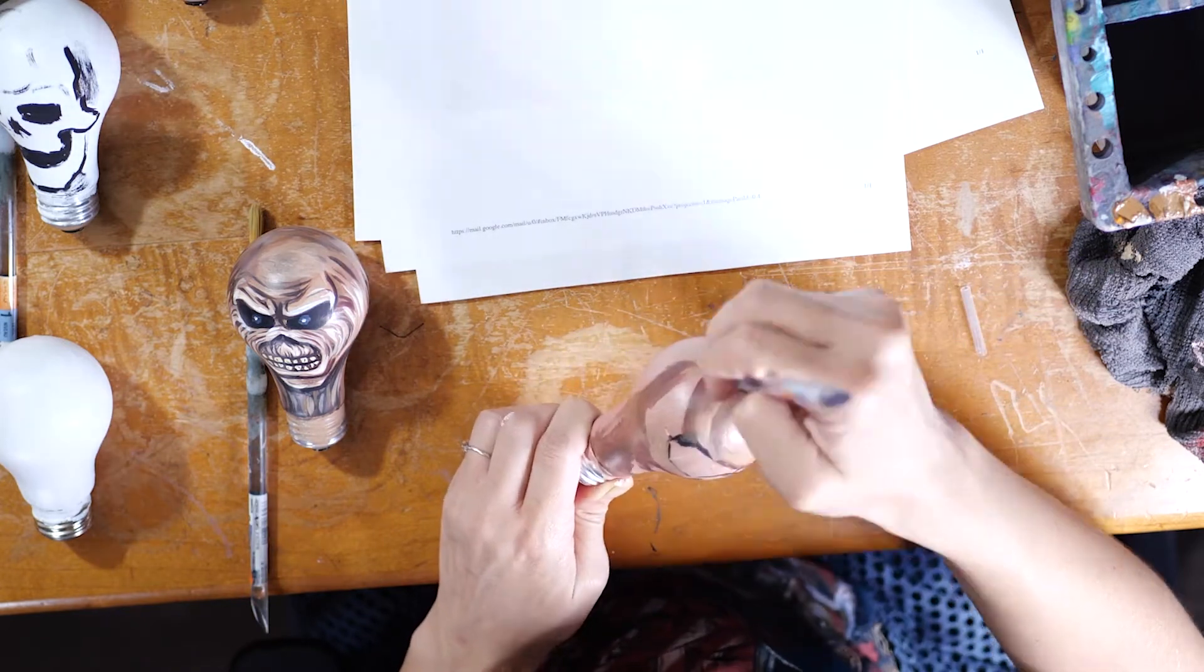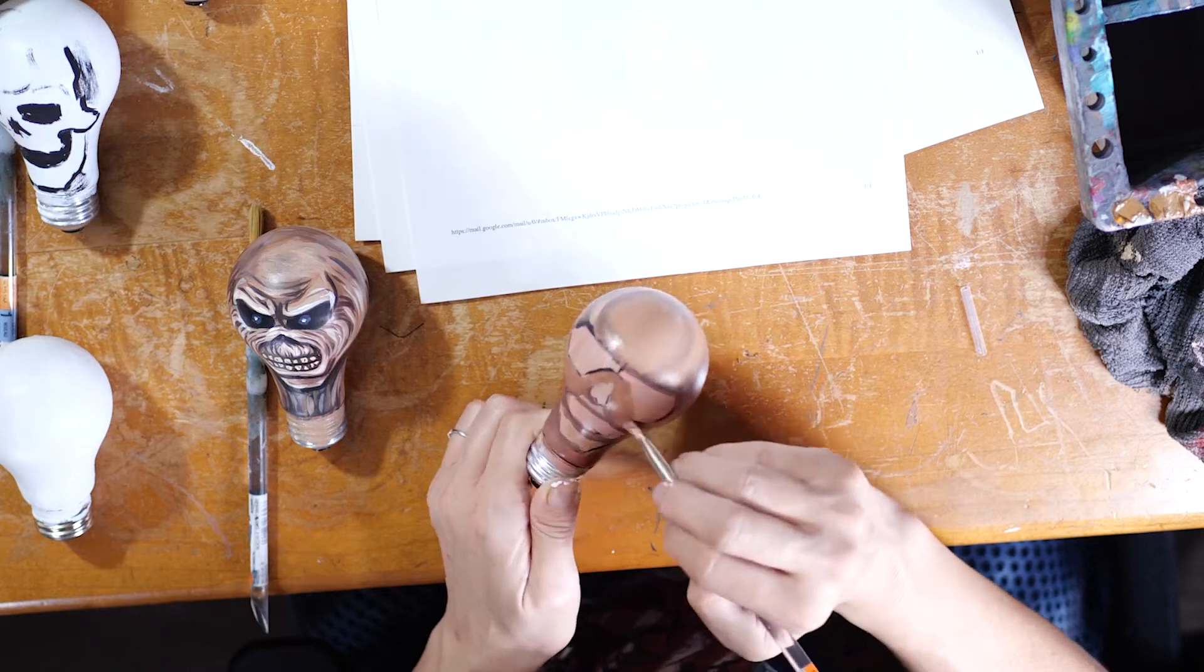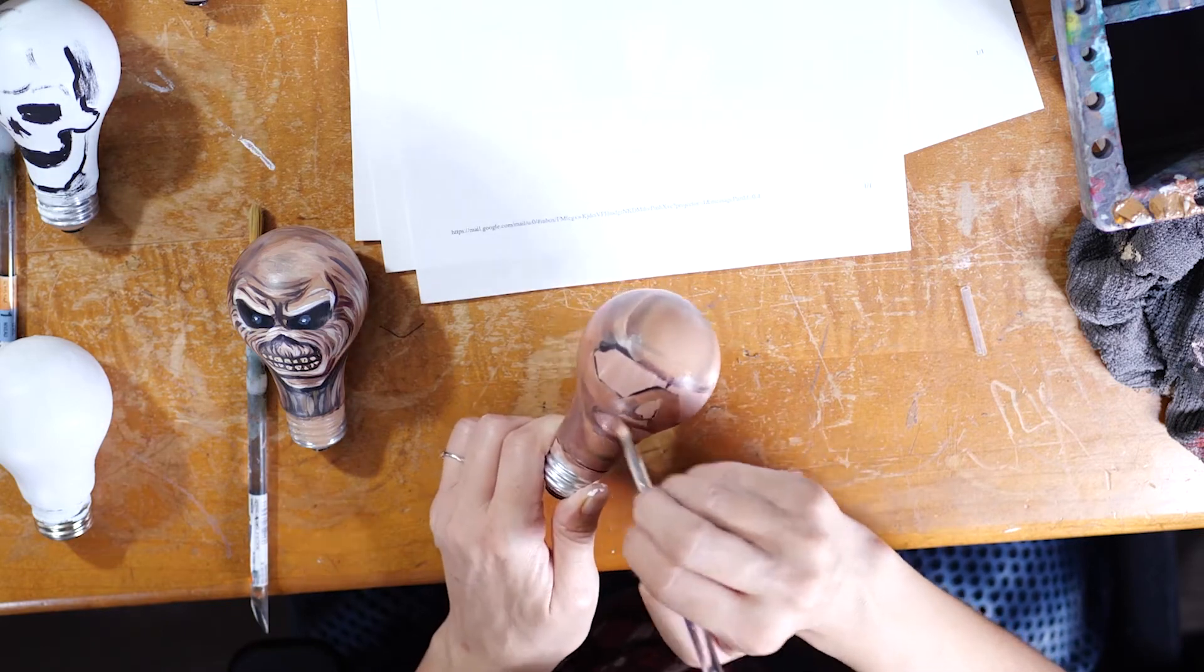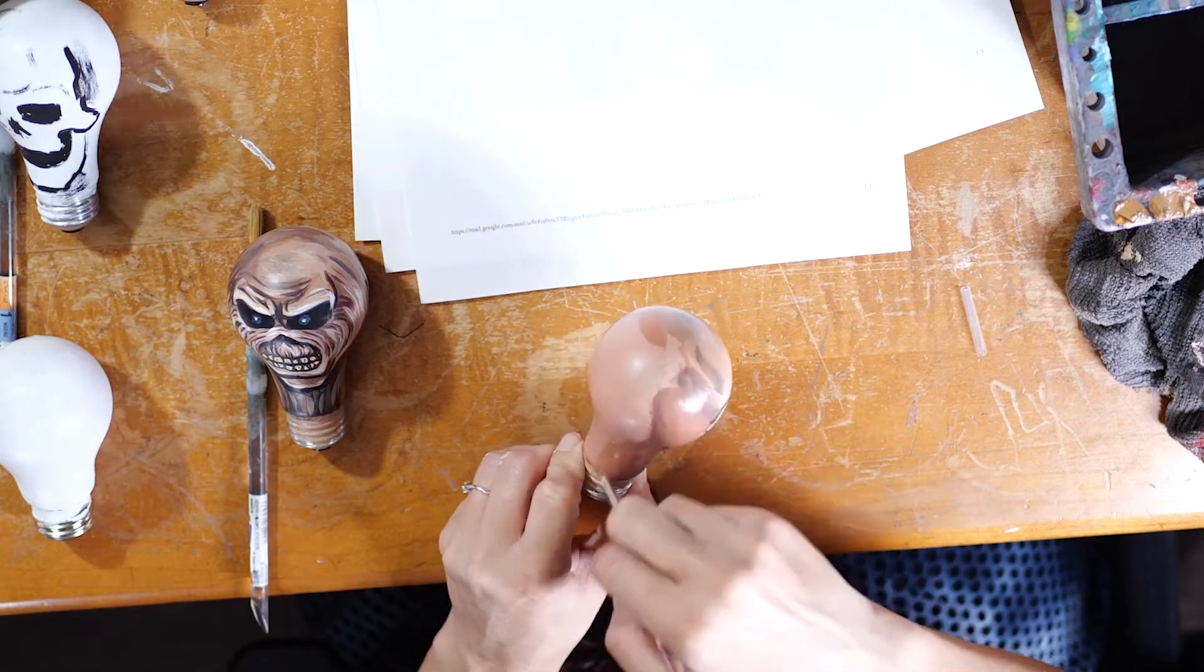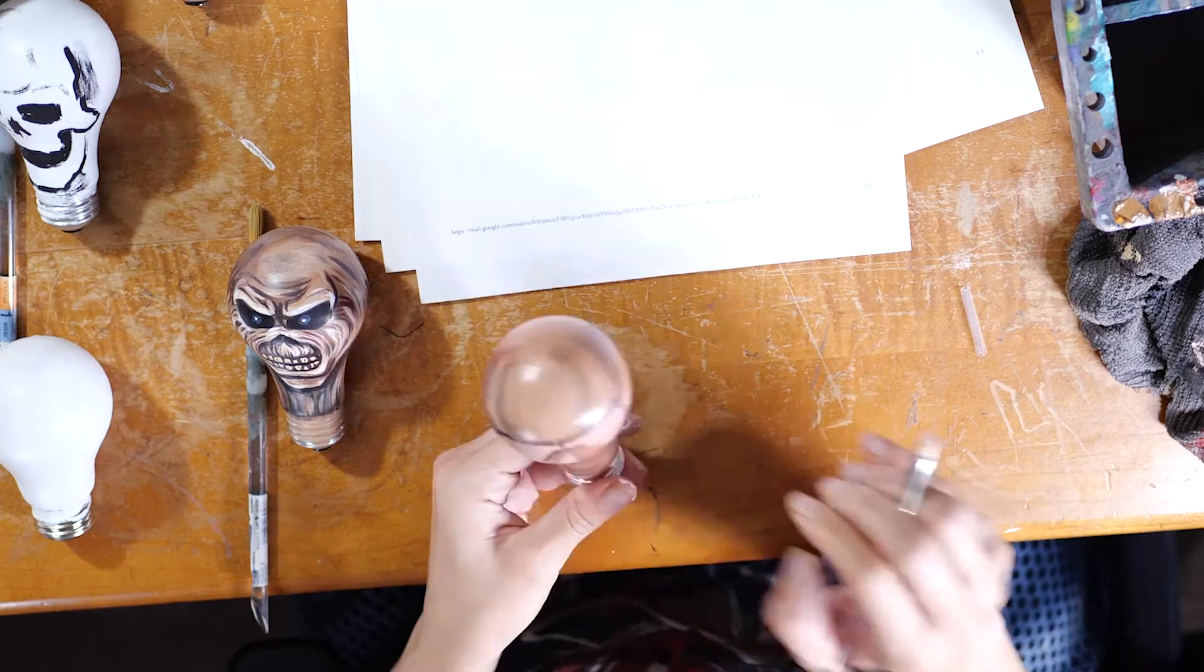Getting a nice transition and a gradient from the dark brown to the lighter yellowish brown that we mixed up is going to really give you a good foundation for when you start adding all the line work and the highlights.